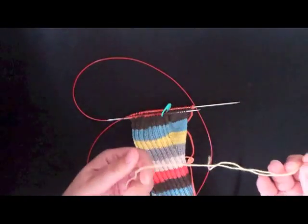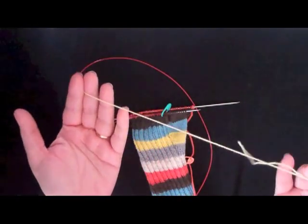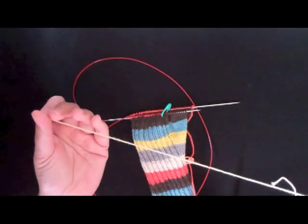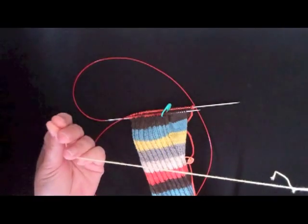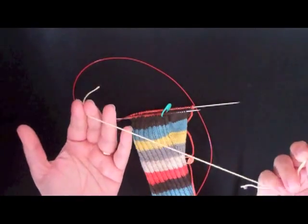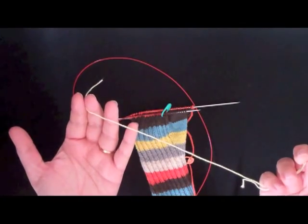And what's meant by waste yarn, by the way, is typically you want to use preferably something like cotton, something that's not going to leave a lot of fuzz on your knitting. You don't want any fibers left behind, and you want it to be roughly the same weight as the yarn that you knit with.